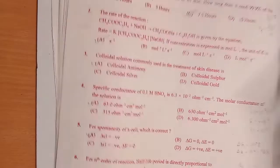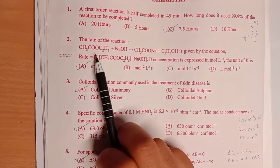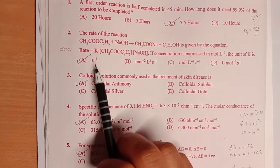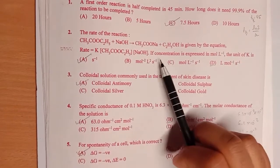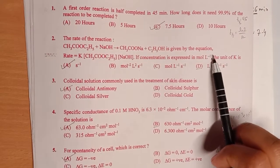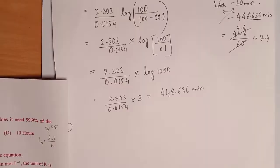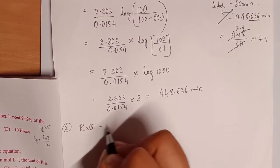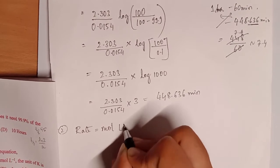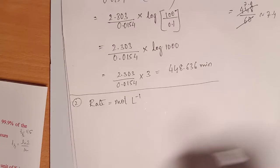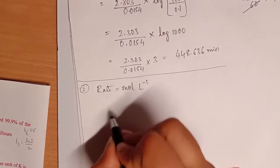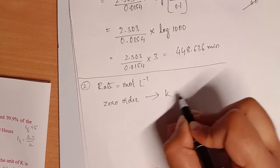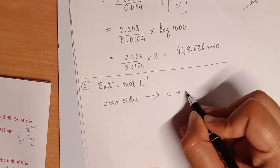The second question: the rate of reaction for CH₃CO is given by the equation: rate equals rate constant K into a concentration term. If concentration is expressed in mole per liter, what is the unit of K? We know that rate is in moles per liter per second.